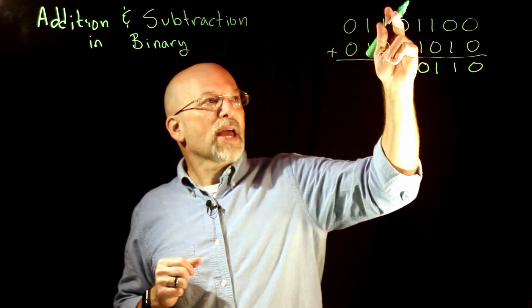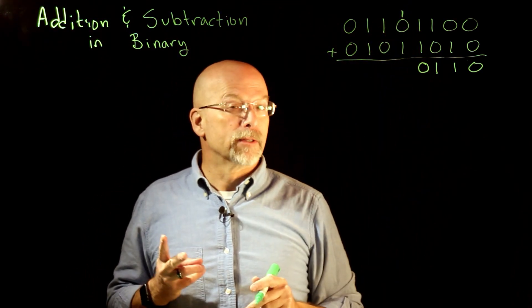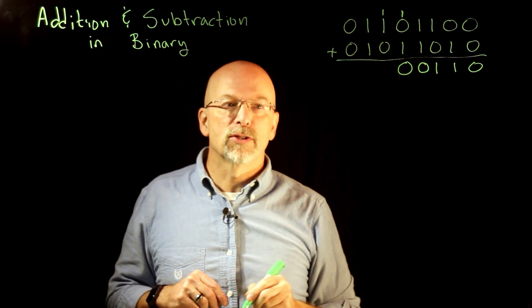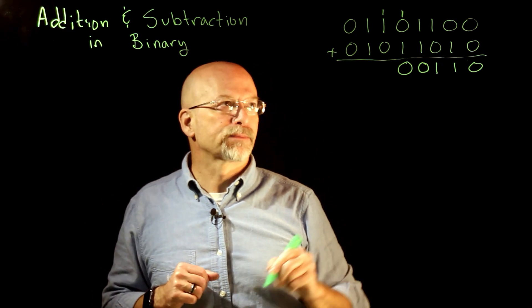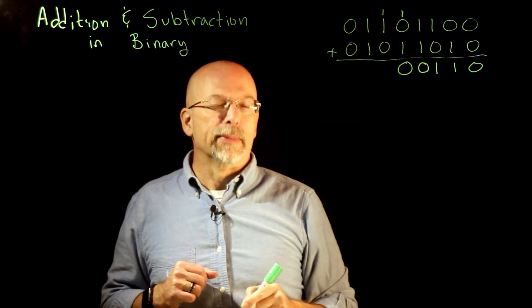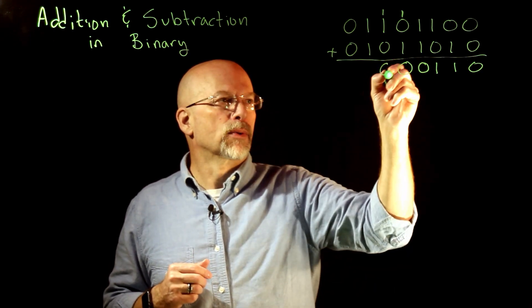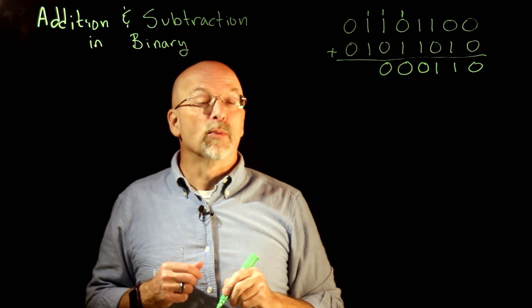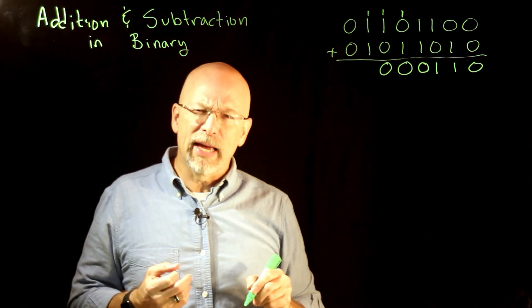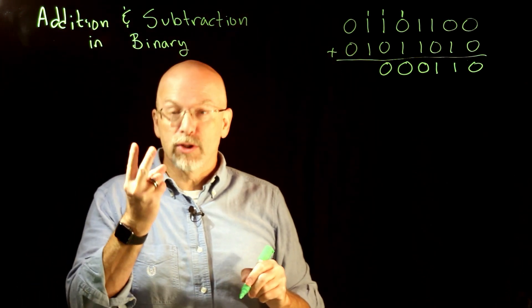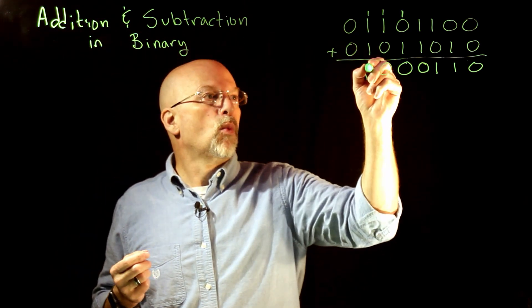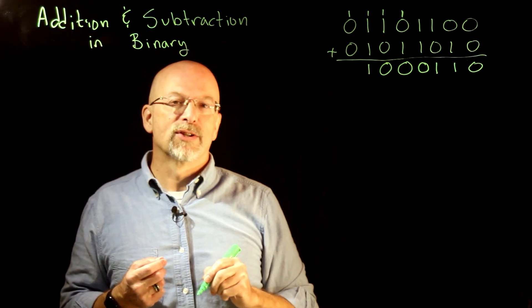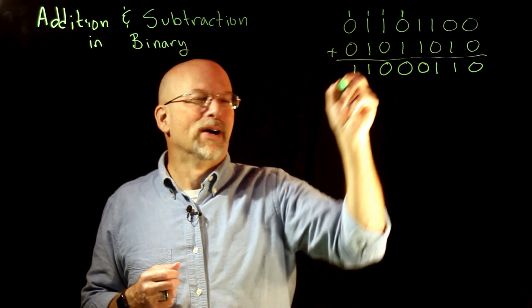So now we have one plus zero plus one — that's two again, so it's a zero in the ones column with a one carried into the next column. One plus one plus zero is again two: a zero with a carry of one. One plus one plus one equals three in decimal, which is '11' in binary, so we put a one in the ones column and carry a one. Then one plus zero plus zero is just one.